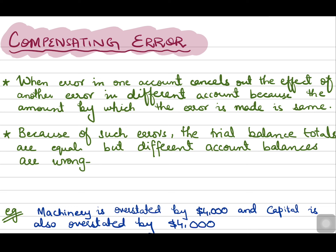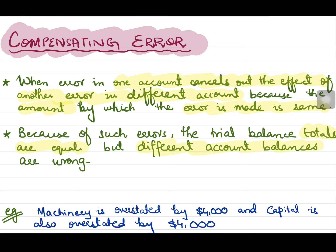The reason why compensating errors are not revealed by the trial balance is because coincidentally the amounts by which the accounts are affected are the same. A compensating error is when an error in one account cancels out the effect of another error in a different account, because the amount by which the error is made is the same. Because of such errors, the trial balance totals are equal, however the different account balances are of course wrong.